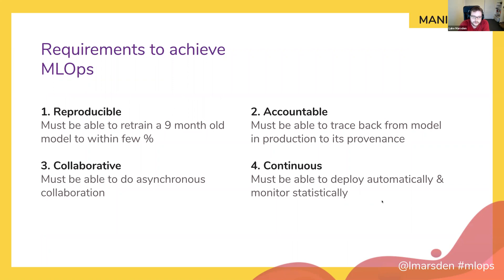If the actual distribution of classifications drifts very significantly from the expected distribution — the one used in training — then you should page a human, fire an alert, and get someone to look at what's going on. Either you deployed a bad model and need to roll back, or the world changed. With computer vision especially, it's often surprising how models distinguish features. For example, a model might never have been trained on stop signs in the snow, and suddenly can't classify them. If it snows over a large part of the country, your stop sign classifier stops working — so you need that statistical monitoring.